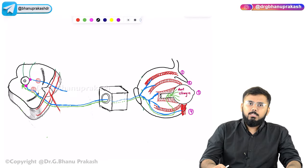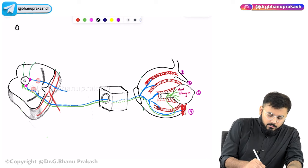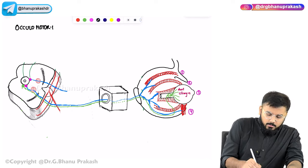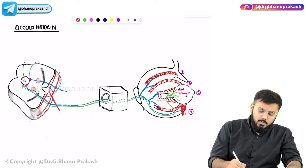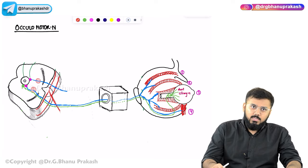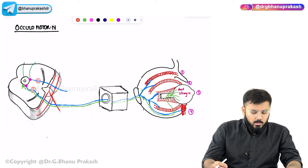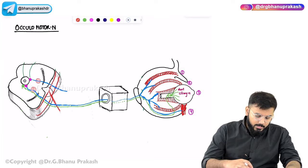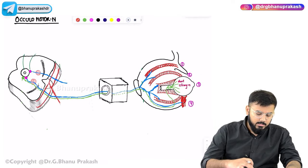Hello guys. Now we shall be discussing one of the very important topics, that is the oculomotor nerve. We shall discuss as many important points as possible in this short session of neuroanatomy as well as head and neck. Coming to the oculomotor nerve, let us first look at these structures, label them, and then discuss the nerve.